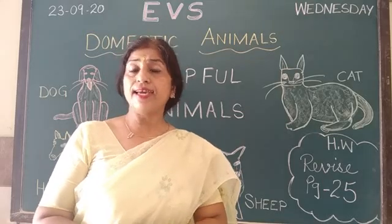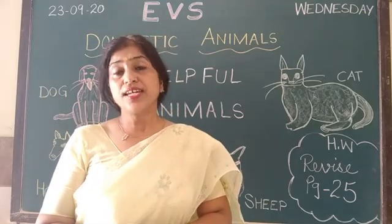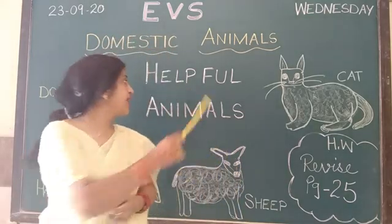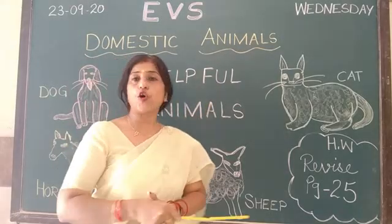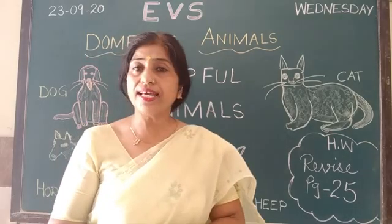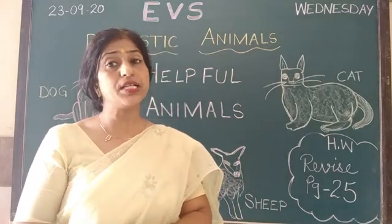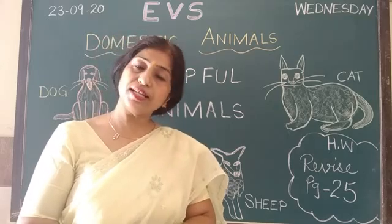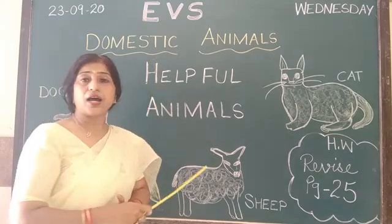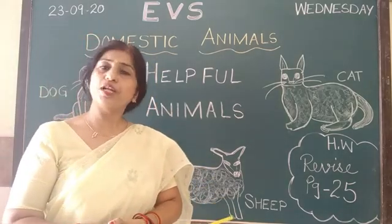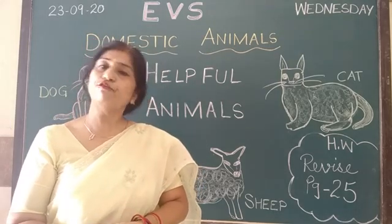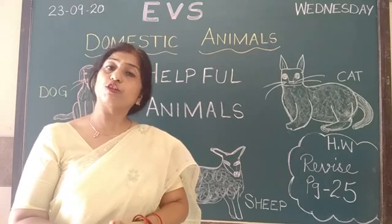Cow और Goat हमको milk देती हैं. इस तरह से honey देती हैं. तो Goat हमको milk देती है. जो हमारे help करते हैं, helpful animals are called domestic animals. Yesterday we learned about wild animals — animals who live in jungle are called wild animals. But domestic animals are called helpful animals.